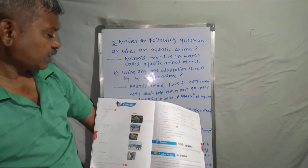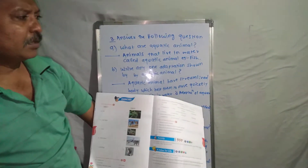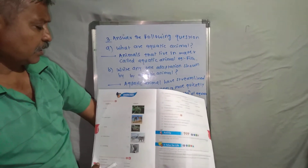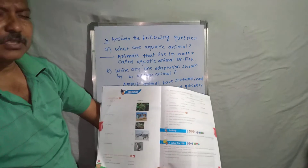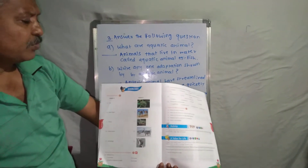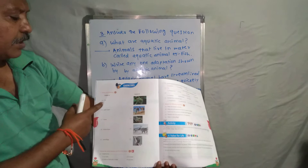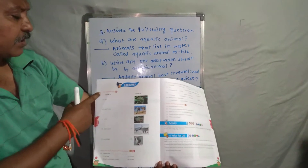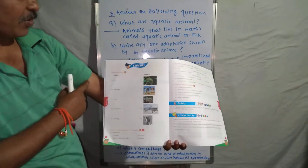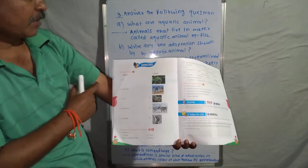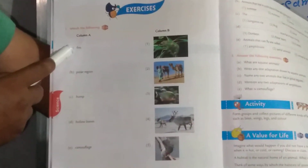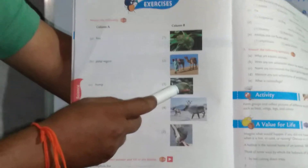Friends, after completing the chapter 'Adaptations in Animals', we move to the exercises. The first question is 'Match the Following'. In the first column, fins is there — which animals have fins? The answer is fish.